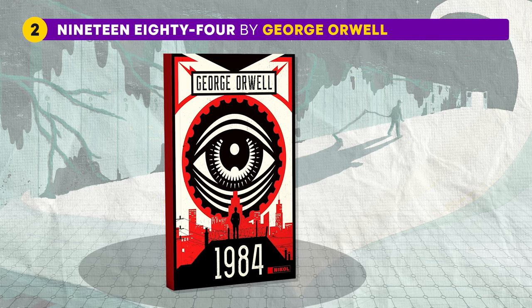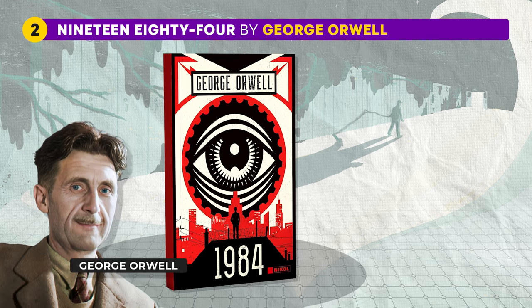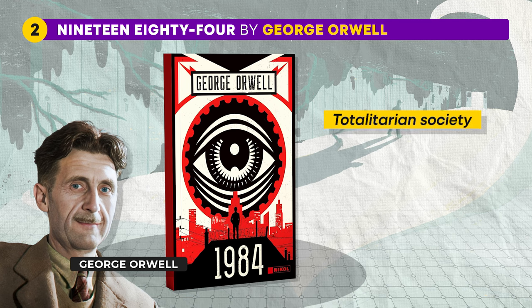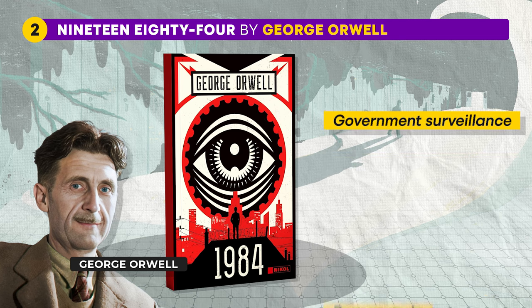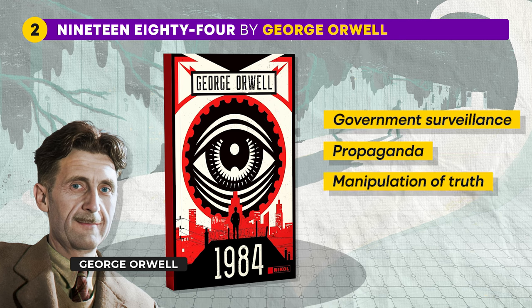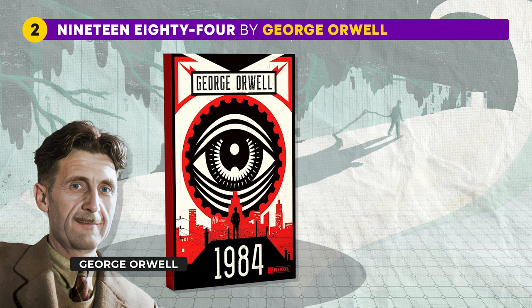The second important dystopian fiction is 1984 by George Orwell. Winston Smith lives under the oppressive rule of the Party in a totalitarian society where individuality is suppressed and independent thought is considered a crime. The story involves his forbidden love affair with Julia and his defiance against the regime. Key themes include government surveillance, propaganda, and the manipulation of truth. Orwell paints a chilling picture of a world dominated by Big Brother, showing the frightening consequences of unchecked authoritarianism and the loss of personal freedom — a cautionary tale warning against sacrificing individual liberties in the name of state control.